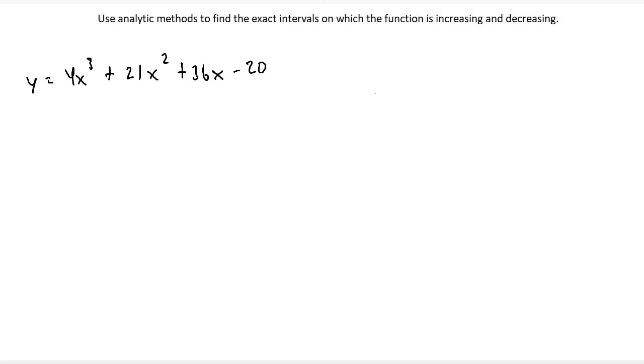Well, similar to finding relative and absolute extremas, the very first step is to find the derivative and set it equal to 0. So y prime is going to be equal to 12x squared plus 42x plus 36. And then we have to set it equal to 0.